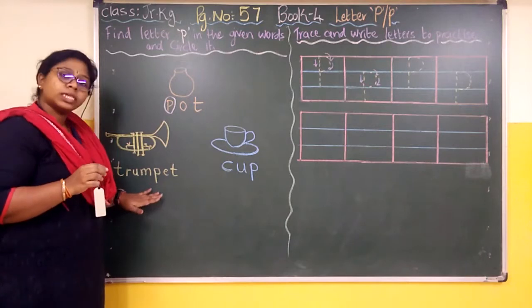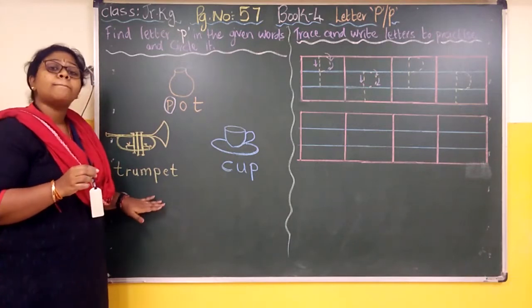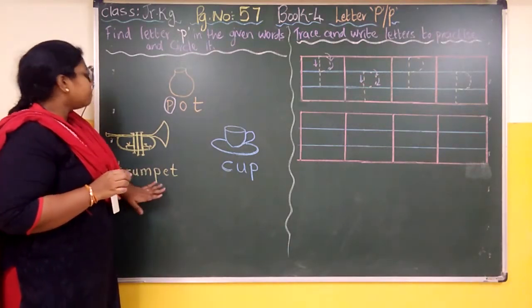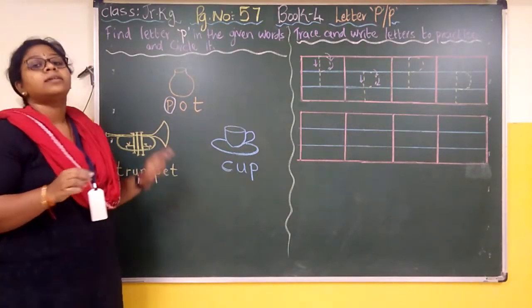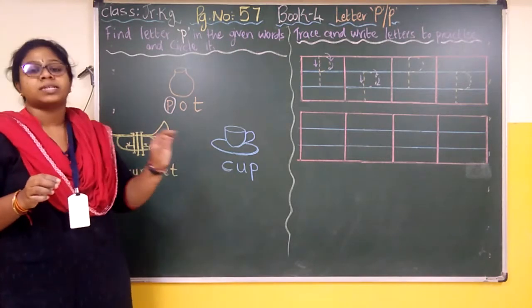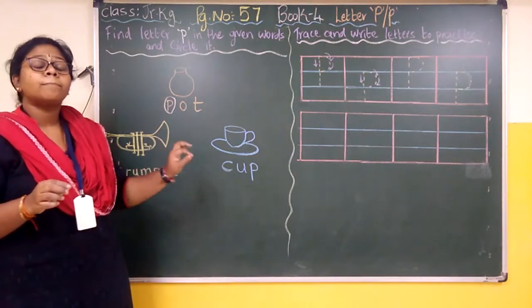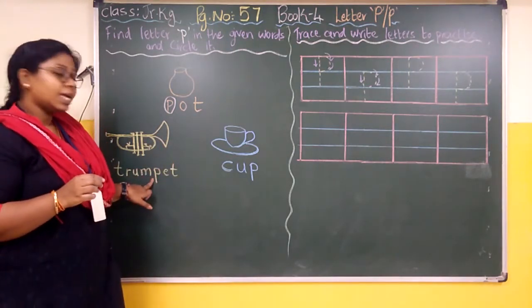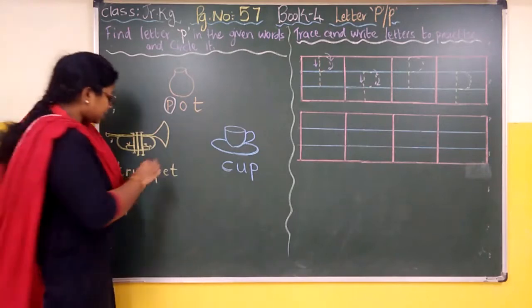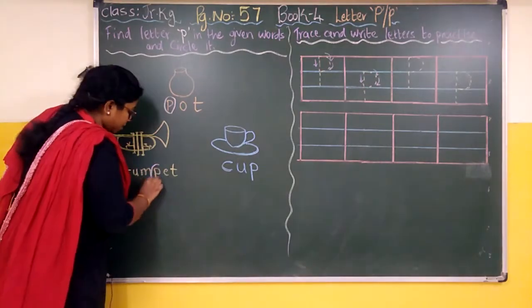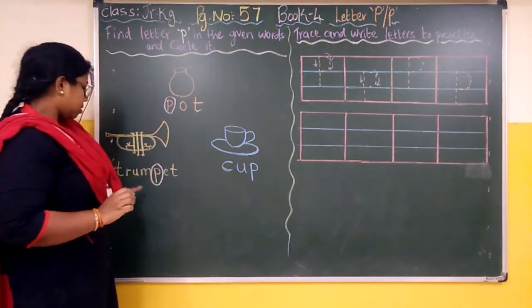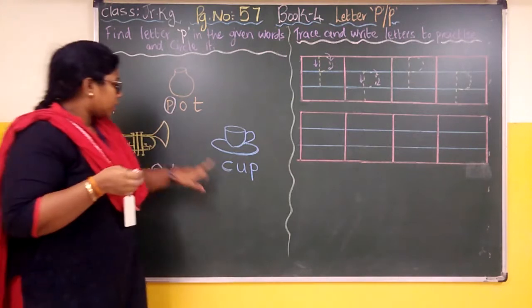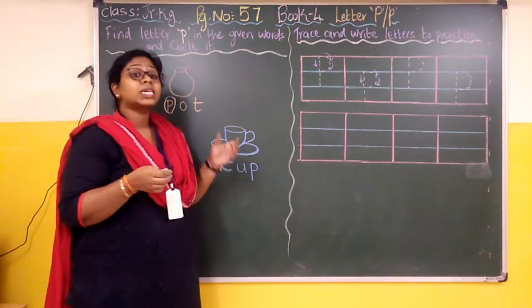Now coming to the next one, that is 'trumpet' — T-R-U-M-P-E-T, trumpet. So where is the letter P coming? Very good.